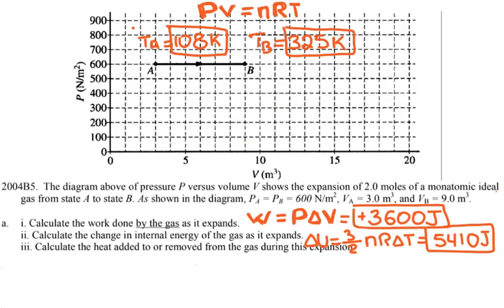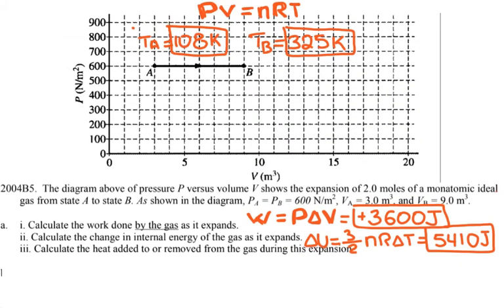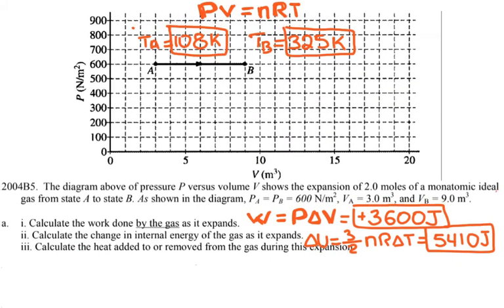The last part of question A asks to calculate the heat added or removed from the gas during this expansion. To find that, I use the first law of thermodynamics: ΔU equals Q minus the work done by the gas, where Q is the heat added or taken away from the system.